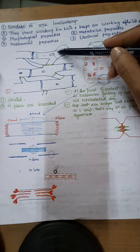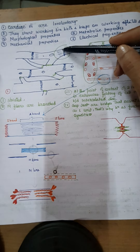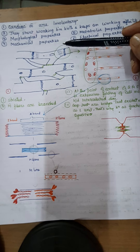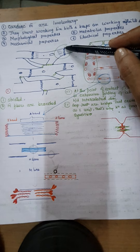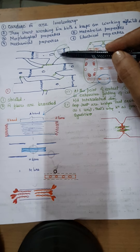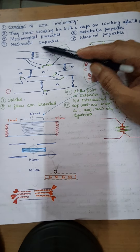The next property is that they are striated, meaning they have linear striations. These striations develop due to the presence of actin and myosin myofibrils, which are the contractile tissues present in the cardiac muscle.